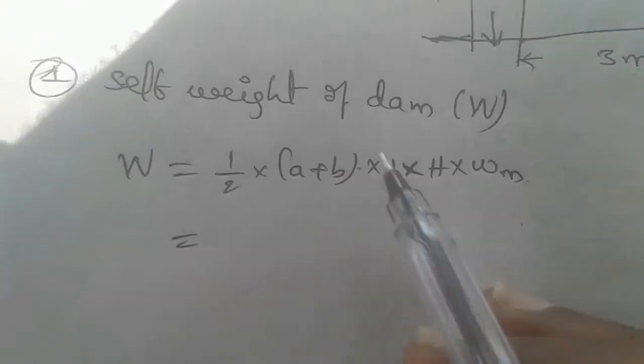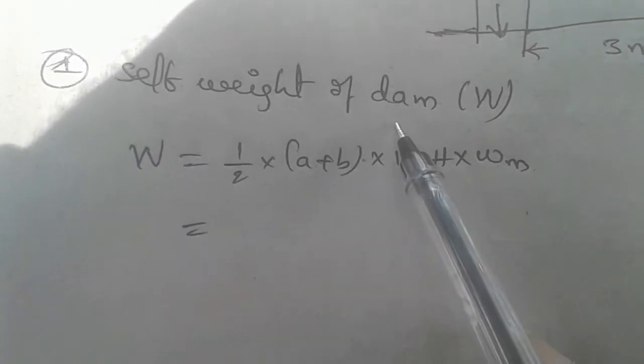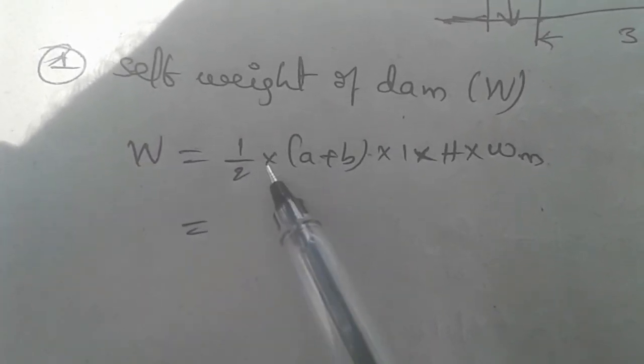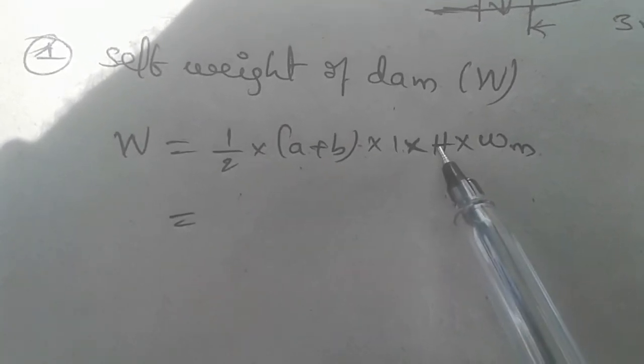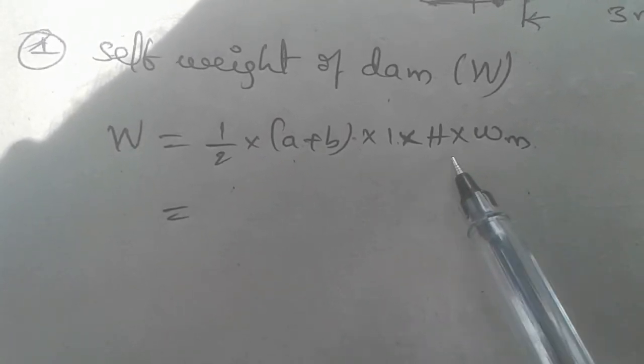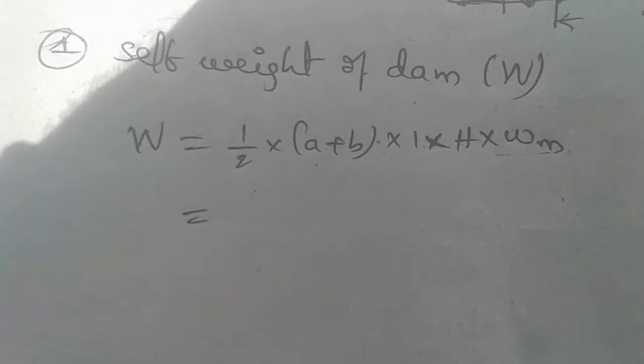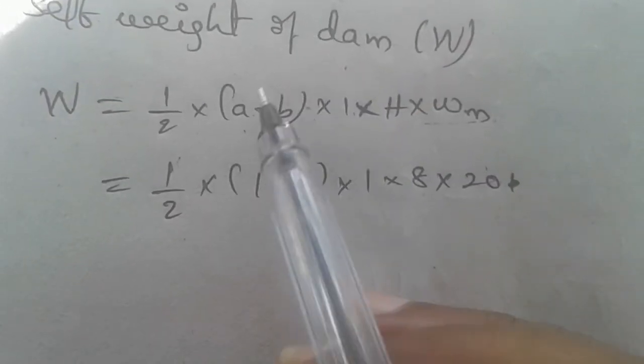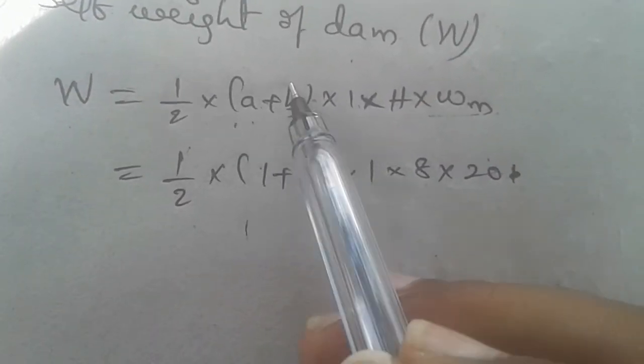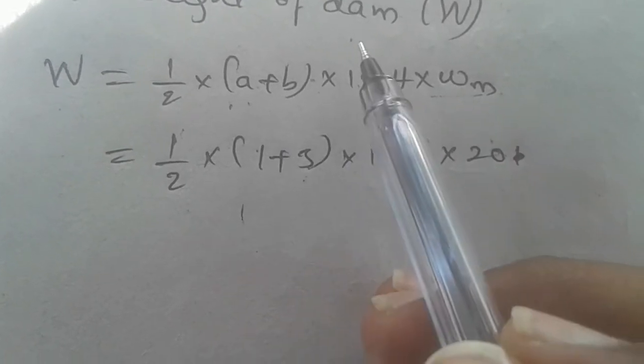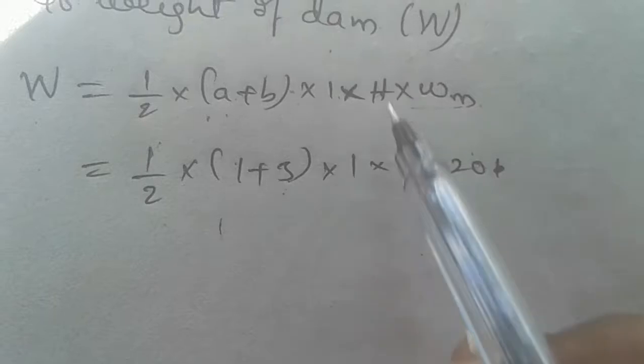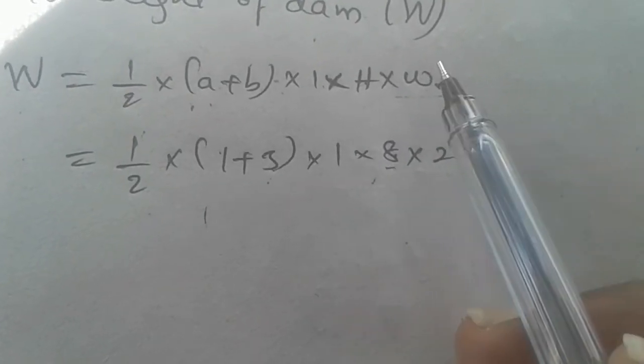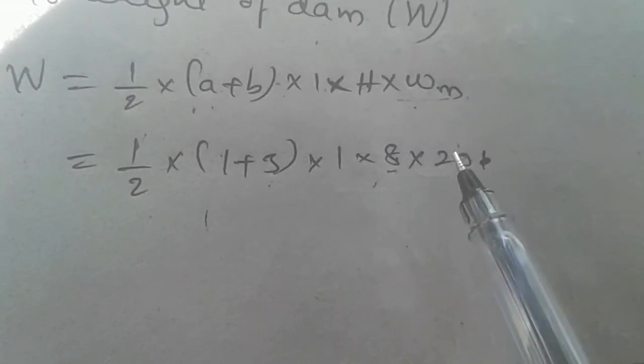The first step is self weight of the dam. Capital W formula is one-half times (A plus B) times 1 times H times W_M.